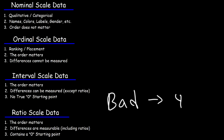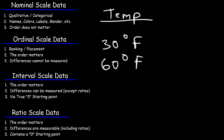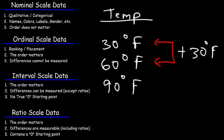Now let's move on to interval scale data. For this one, the order does matter and differences can be measured. Temperature is a good example. If we have 30 degrees Fahrenheit, 60 degrees Fahrenheit, and 90 degrees Fahrenheit — the difference between 30 and 60 can be measured as 30 degrees, and the difference between 60 and 90 is also 30 degrees. So differences can be measured for interval scale data.